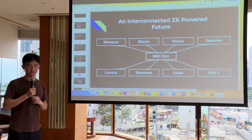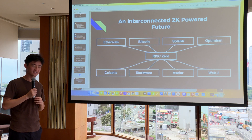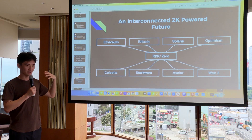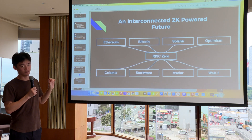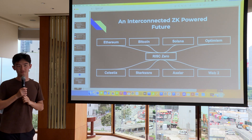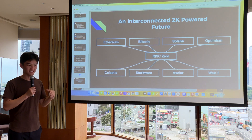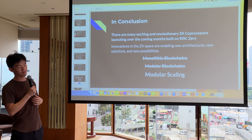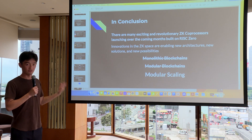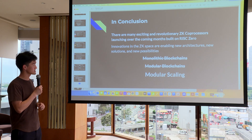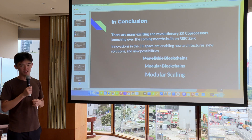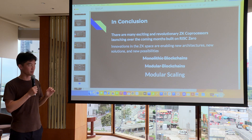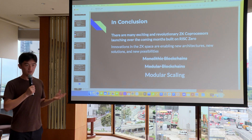The vision is an interconnected ZK-powered future where RiscZero acts as a multi-chain ZK layer bringing ZK scaling to any chain, where any chain can take advantage of the ZK coprocessor — and eventually incorporating Web2 tech and data. We're actively working with partners in government, identity, and healthcare to connect those verticals back into Web3. In conclusion, five years ago we had monolithic blockchains, three years ago modular blockchains — now that we're abstracting away the idea of a blockchain itself, we can think of it as modular scaling.